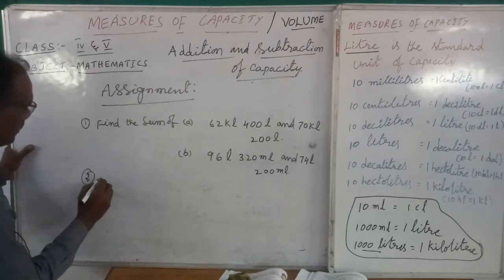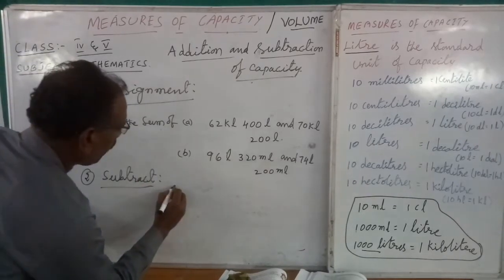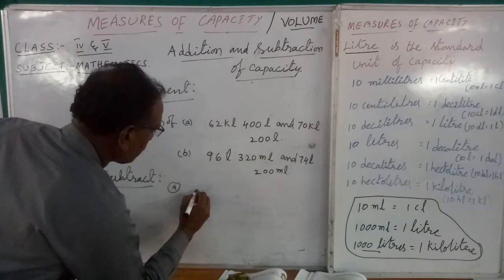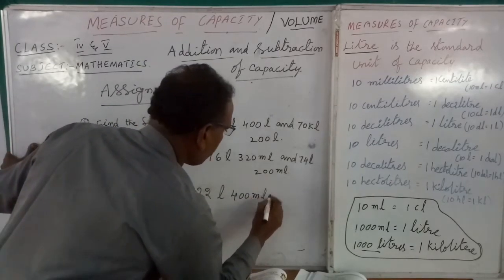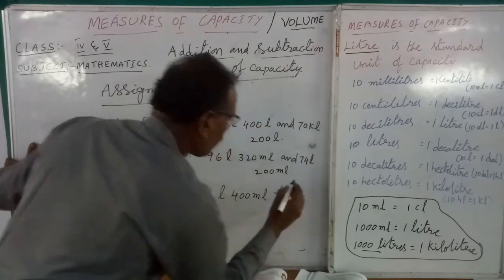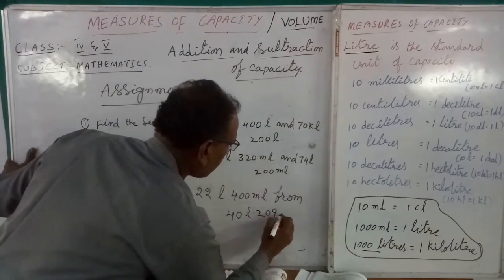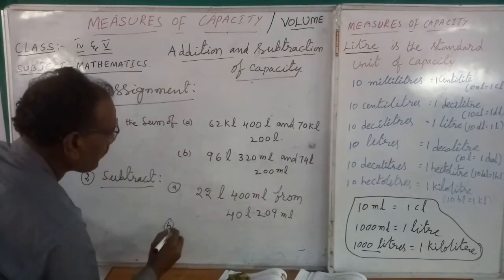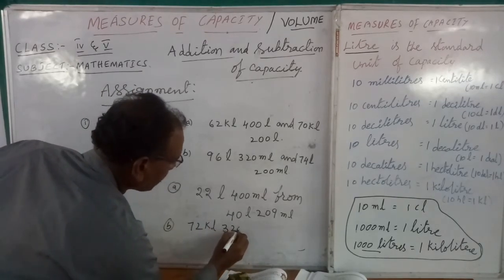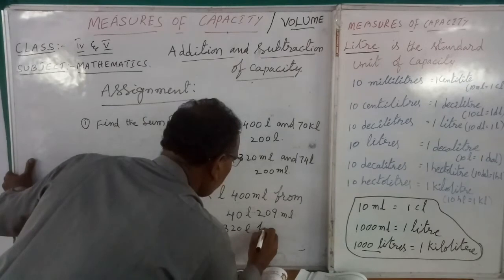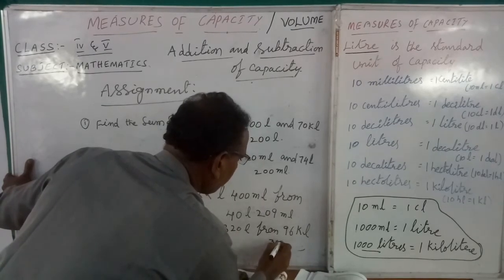Second point: subtract. Point A: 22 liters 400 ml from 40 liters 209 milliliters. Point B: 72 kiloliters 320 liters from 96 kiloliters 300 liters.